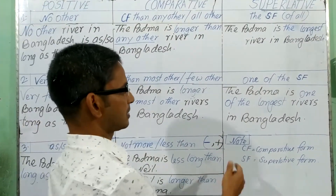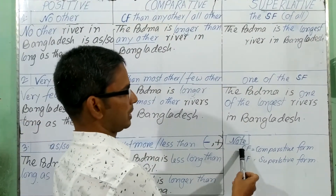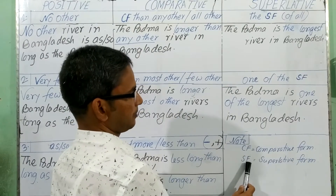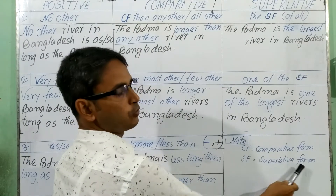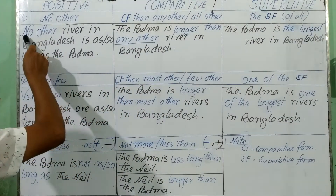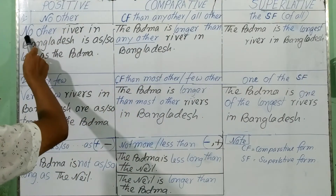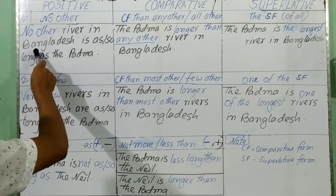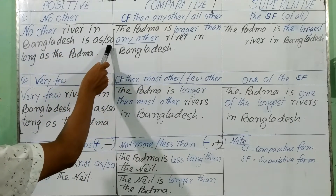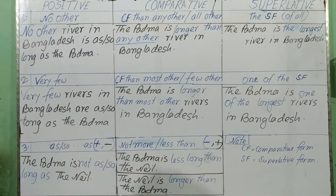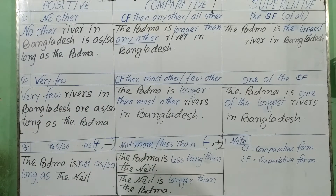I have given some notes below. CF means comparative form, and SF means superlative form of the describing word. In the first rule, you can see 'no other.' The first sentence is: 'No other river in Bangladesh is as long as the Padma.' You can use 'as' or 'so' here — you may have either 'as' or 'so.'